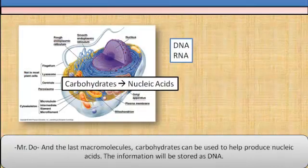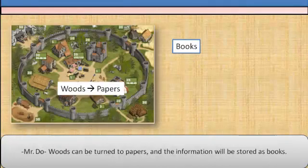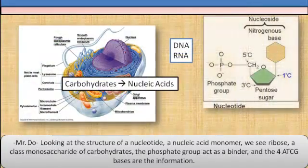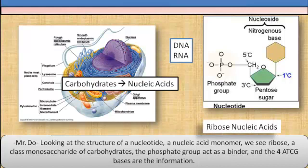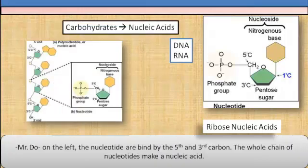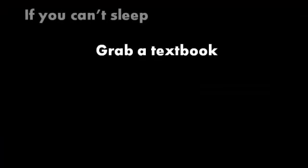For the last macromolecule, carbohydrates can be used to help produce nucleic acids, and the information will be stored as DNA. Woods can be turned into paper, and the information will be stored as books. Looking at the structure of a nucleotide — the nucleic acid monomer — we see ribose, a monosaccharide class of carbohydrates. The phosphate group acts as a binder, and the four bases A, T, C, G are the information. The nucleotides are bound by the fifth and third carbon, and the whole chain of nucleotides makes a nucleic acid. Review this video a second time and it will make more sense.